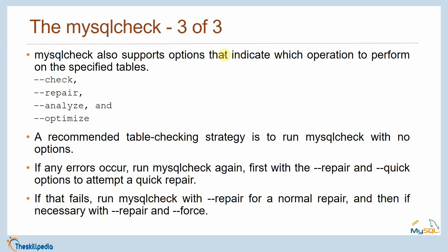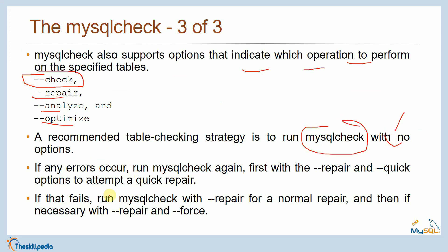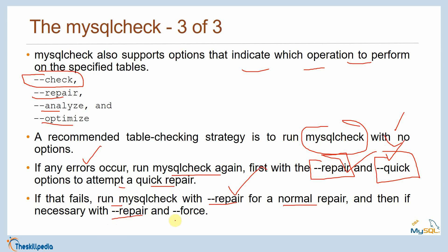mysqlcheck supports options that indicate which operation to perform: --check, --repair, --analyze, or --optimize. The recommended strategy is to run mysqlcheck with no options first. If any errors occur, run it with --repair or --quick for a quick repair. If quick repair fails, run mysqlcheck with a normal --repair. If that fails, use --repair --force — though in this case you may lose some data, so be careful.